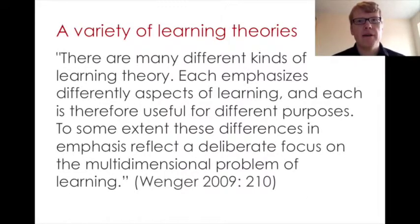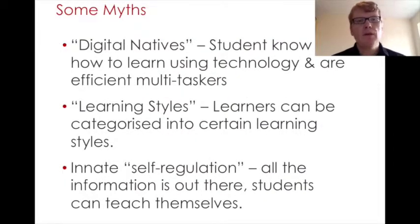The underlying theories of learning are varied, and gaining a good understanding of them is tricky if you are new to this area. Etienne Wenger sums it up well: there are many different kinds of learning theory, each emphasizing different aspects of learning, and each is therefore useful for different purposes. One consequence of this diversity of theories is that misconceptions abound, revolving around such ideas as young people as digital natives, learning styles, and innate self-regulation of learning.